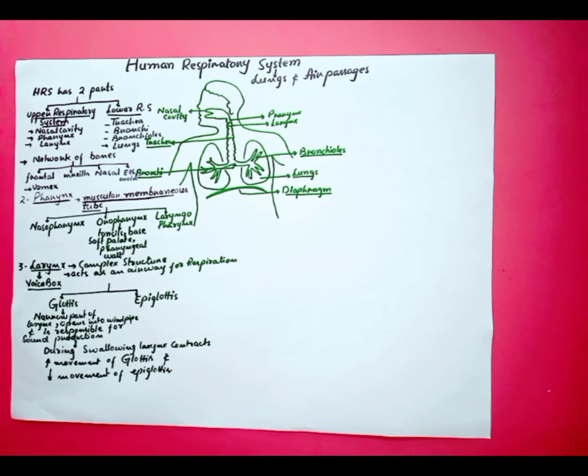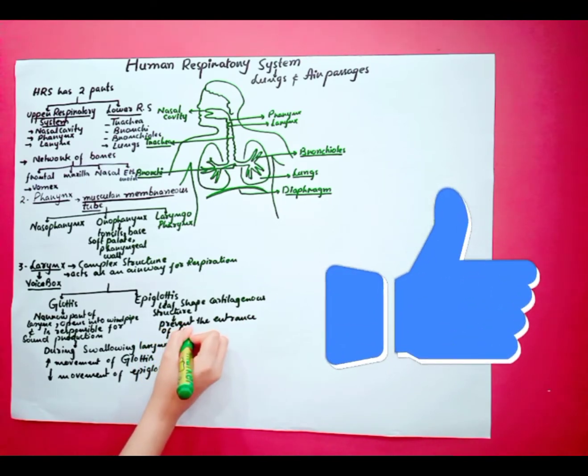What is epiglottis? This epiglottis is a leaf-shaped cartilaginous flap structure which prevents the movement of food to enter the airway passages.